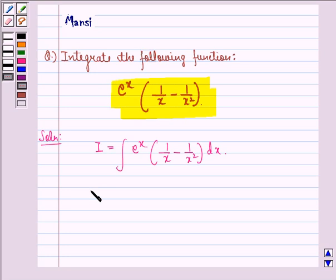What we do is we put e^x/x equal to t, or we can say this is same as e^x · (1/x) equal to t.